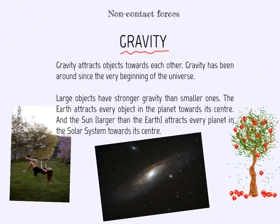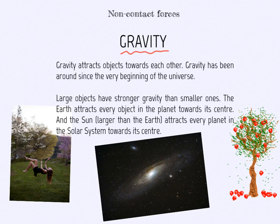Now, gravity. Gravity attracts objects towards each other. Gravity has been around since the very beginning of the universe. Large objects have stronger gravity than smaller ones. The earth attracts every object on the planet towards its center. And the sun, which is larger than the earth, attracts every planet in the solar system towards its center.